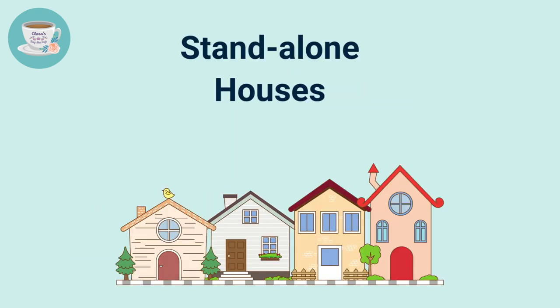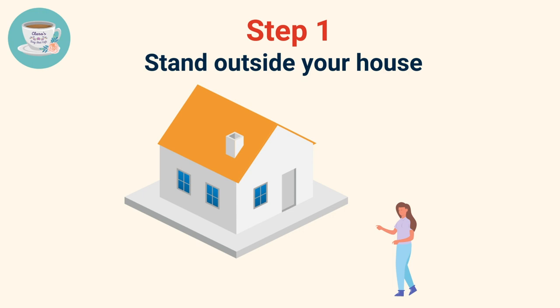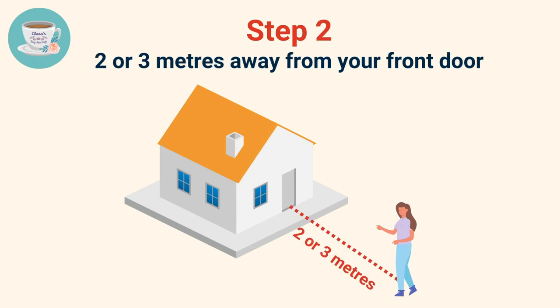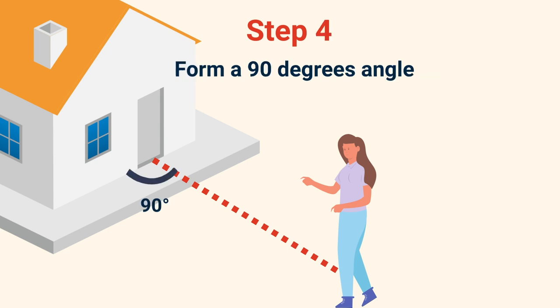Let's first look at standalone houses. Step one: you need to stand outside your house. Step two: stand two or three meters away from your front door. Step three: make sure you are directly facing your front door. Step four: use your front door as a reference to form a 90-degree angle.